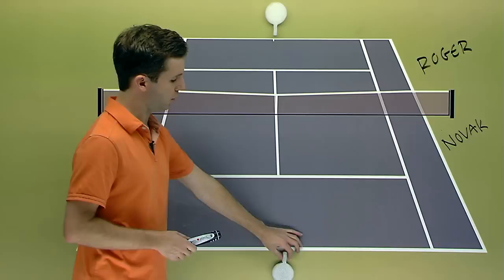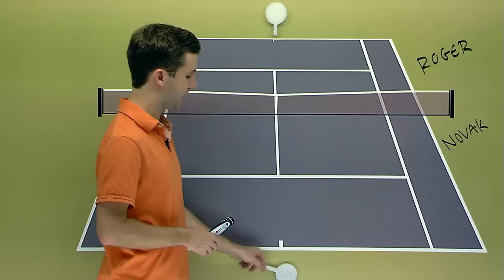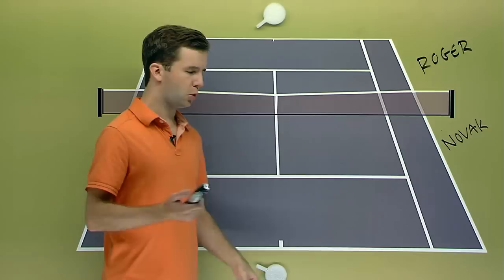Djokovic won that in three sets. And you can almost go back to the Aussie Open semis as well from this year when Djokovic beat Fed, but Fed had some success using the tactic we're going to talk about right now. Now, remember, circle is the player, not tennis racket. Circle is the player, sticks the side they're hitting on.